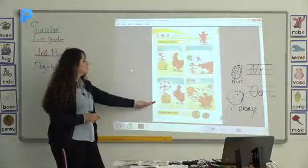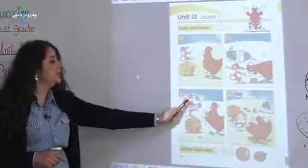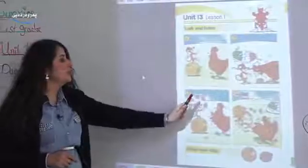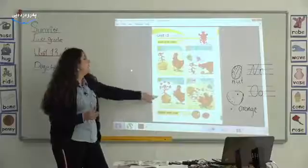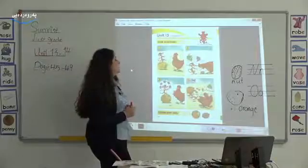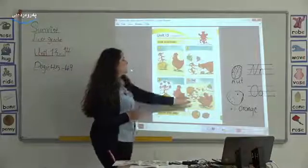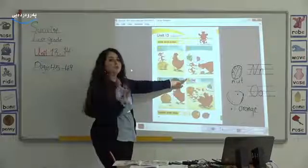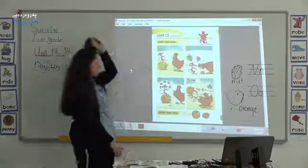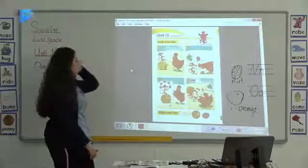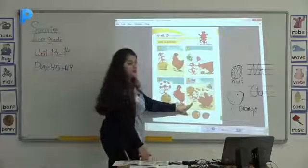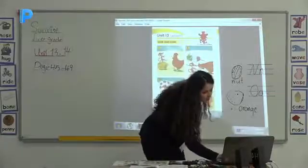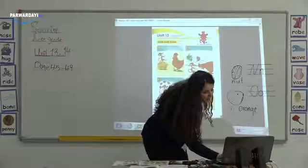One, two, three, four, five nuts. The mouse has five nuts. It's a nut. Picture 4, the 4th picture. Goodbye, mouse. Goodbye.